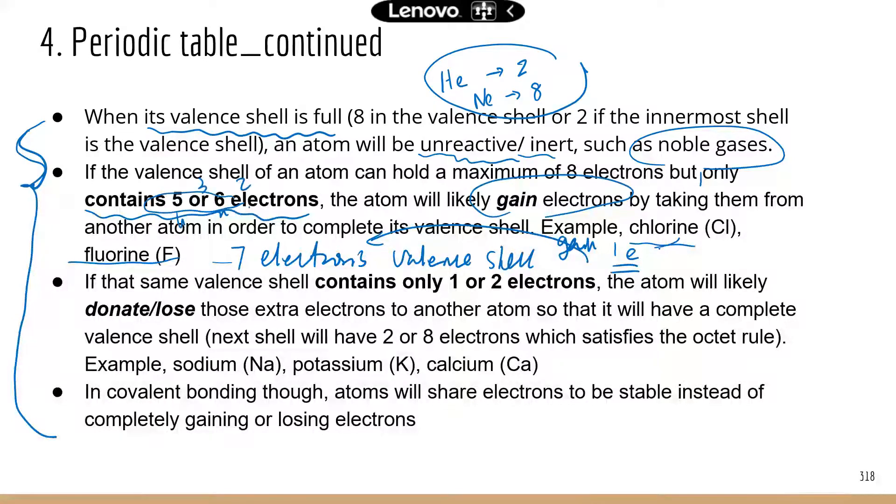On the other hand, if an atom has only one or two electrons in the valence shell, it will tend to donate or lose that electron. We talked about potassium earlier. Potassium has just one electron in the valence shell. So it's easier to just donate that electron to somebody else. Then you go down to the next shell, which now becomes the valence shell. And that shell has eight electrons already. So now you are stable.